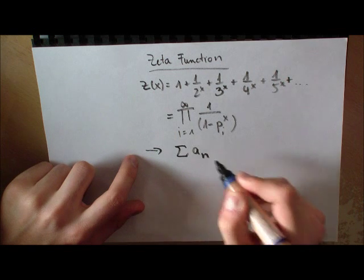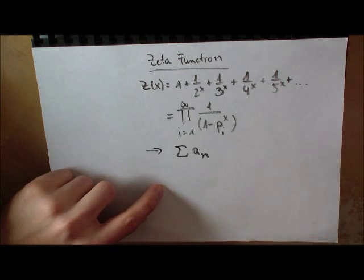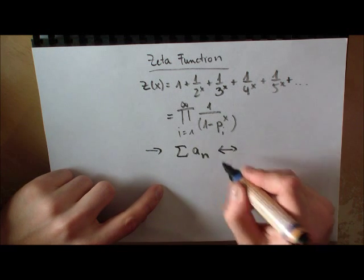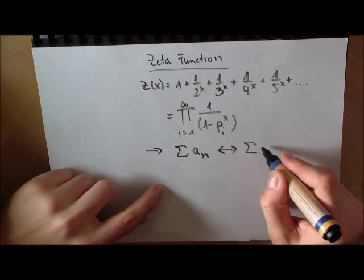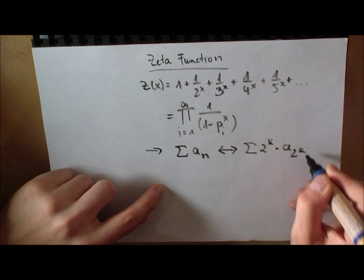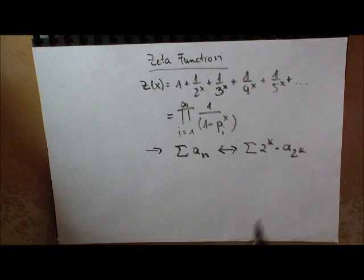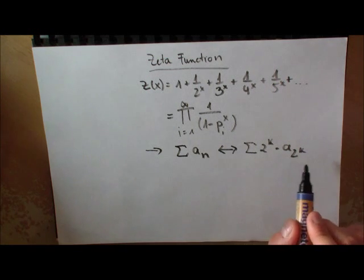What this says is: if you have a sum and you want to find out if this sum is converging or diverging, then you could look at another sum which looks like 2 to the k times a sub 2 to the k. The index is not n anymore but 2 to the k, and if you see that this is converging then the original is converging, and if this is going to infinity then the original also goes to infinity.